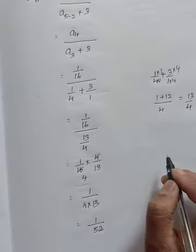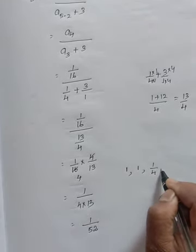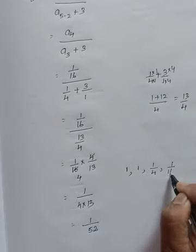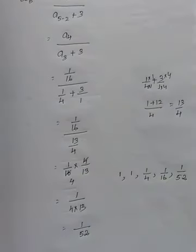Therefore, the first 5 terms are 1, 1, 1 by 4, 1 by 16, 1 by 52. Thank you children.